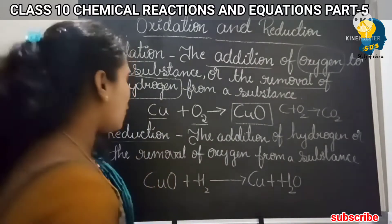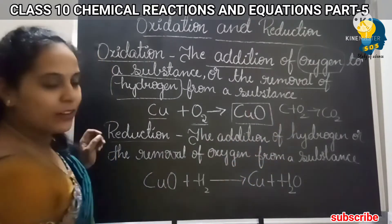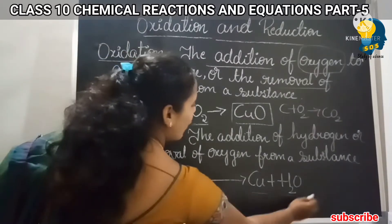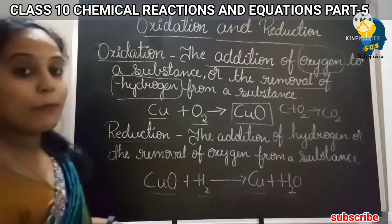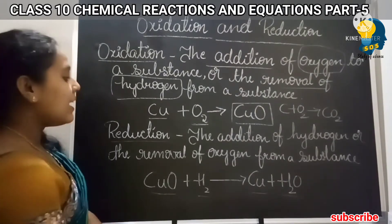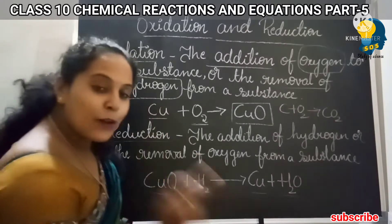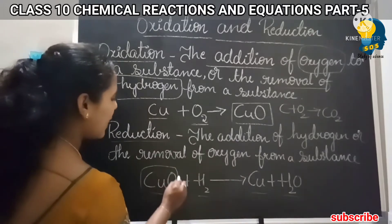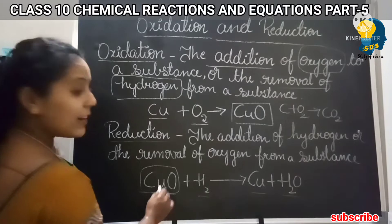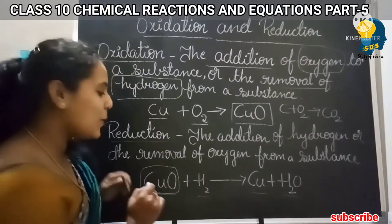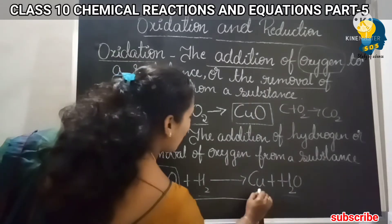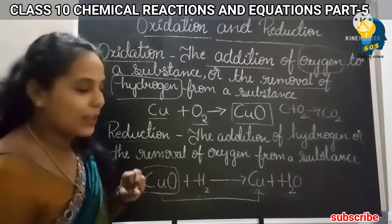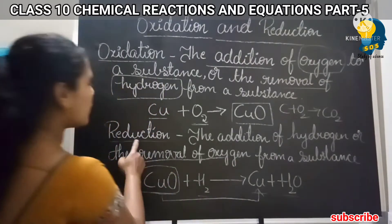Let me give you an example. Here is a chemical equation: copper oxide plus hydrogen gives rise to copper plus water. First, let me explain reduction. Reduction is nothing but addition of hydrogen or removal of oxygen. If you observe copper oxide here — copper oxide has been reduced by removing oxygen. So removal of oxygen is also termed as reduction.